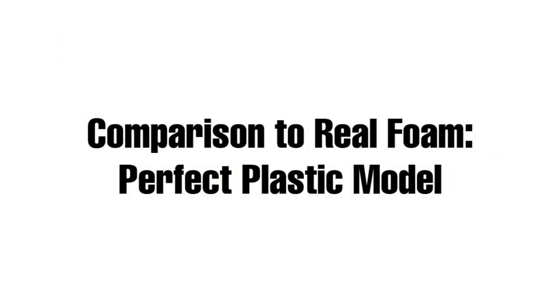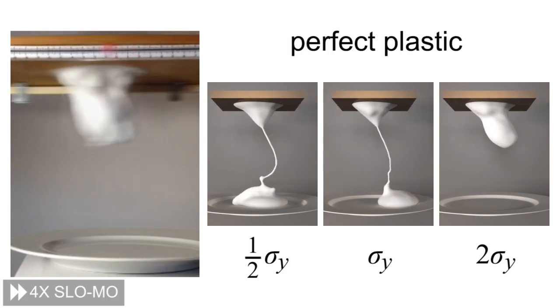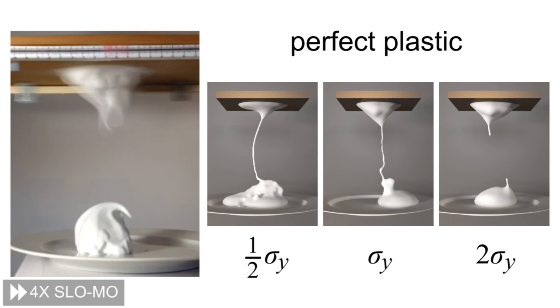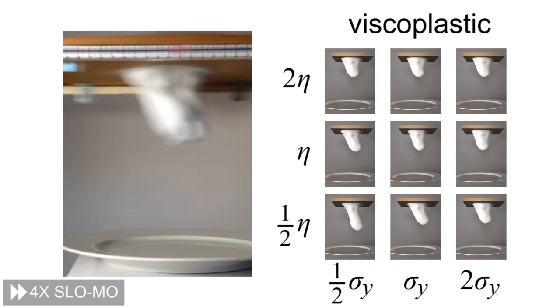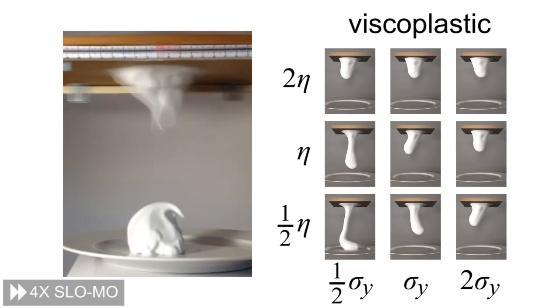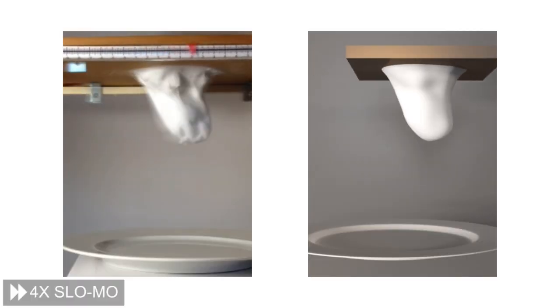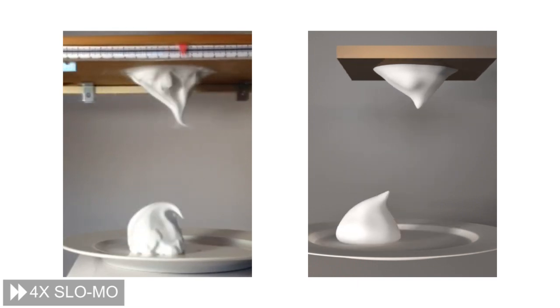What benefits does the Herschel-Bulkley model bring when compared to other plasticity models? With a simpler perfect plasticity model, the foam flows immediately after the shear stress exceeds the yield threshold. With a viscoplastic model, the flow begins slowly once the shear exceeds the yield threshold, but the rate of flow is constant. The nonlinear Herschel-Bulkley flow model introduces proper shear thinning behavior, allowing the foam to flow more rapidly when the applied stress is large, which agrees with the empirical behavior of real foam.